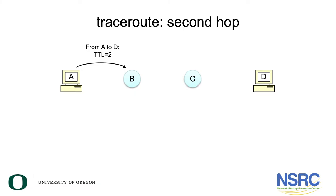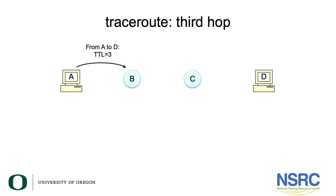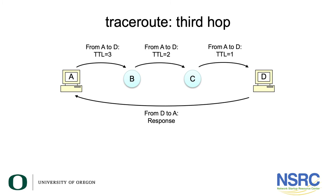Then you can send the packet with a TTL of two. It will go to the first router, be decremented to one, go to the second router, and that router will throw the packet away and send back an ICMP error saying time to live exceeded. The source address of that error message tells you the IP address of that router. By sending these test probes with increasing TTLs, you can actually learn the topology of your network — which routers your packet is tracing through.